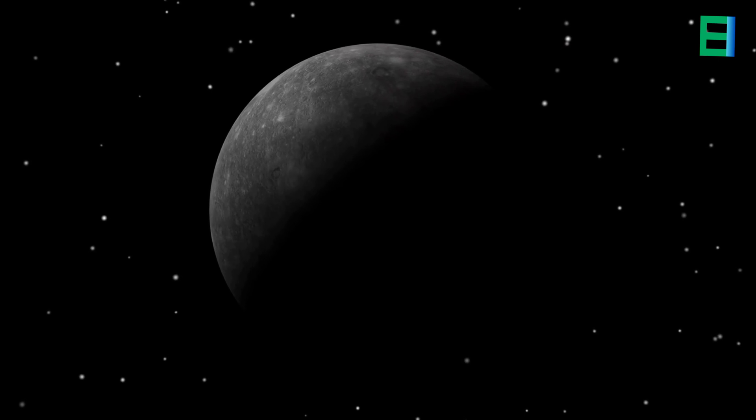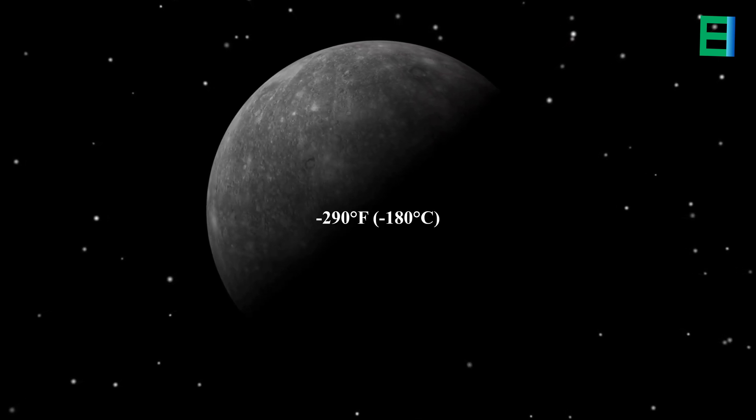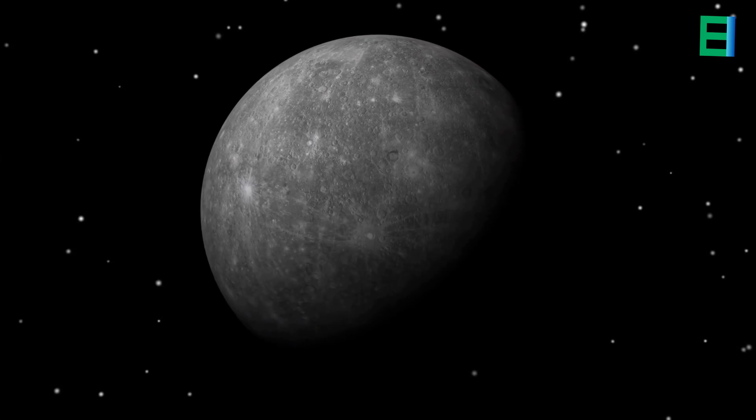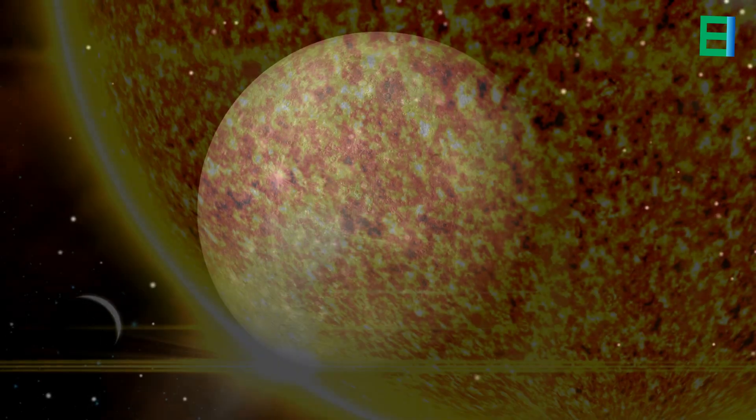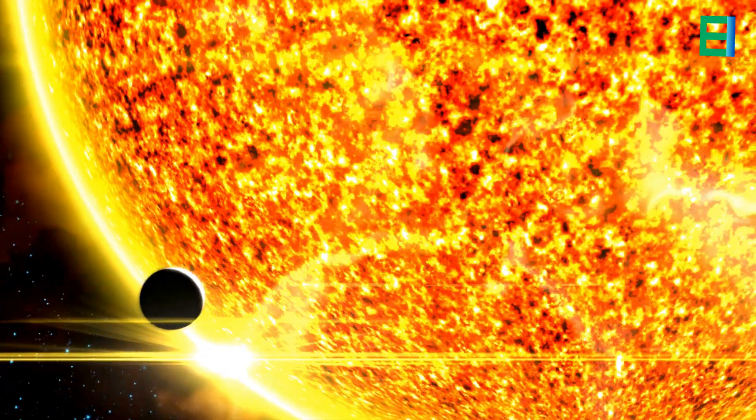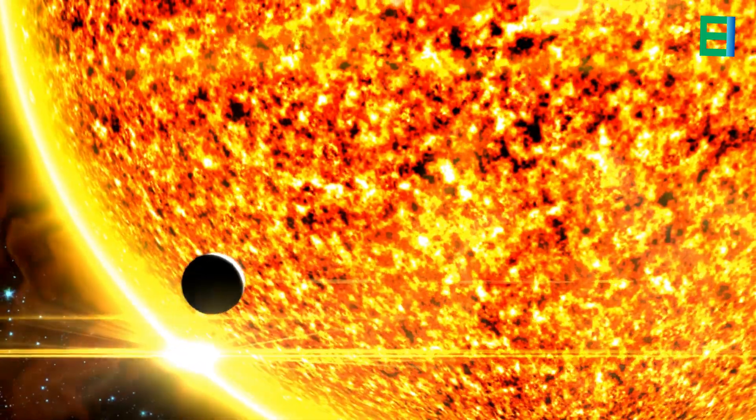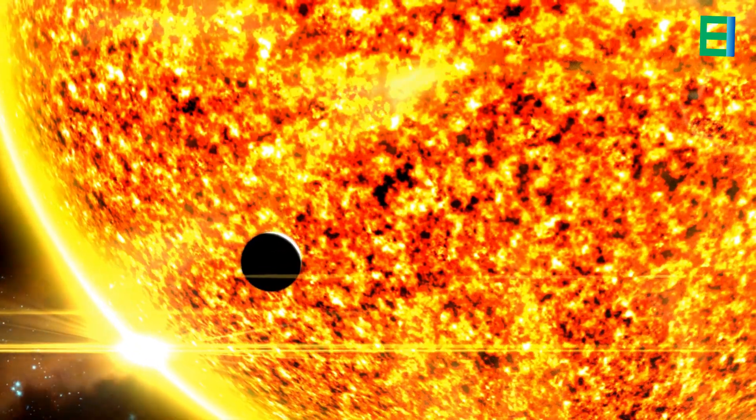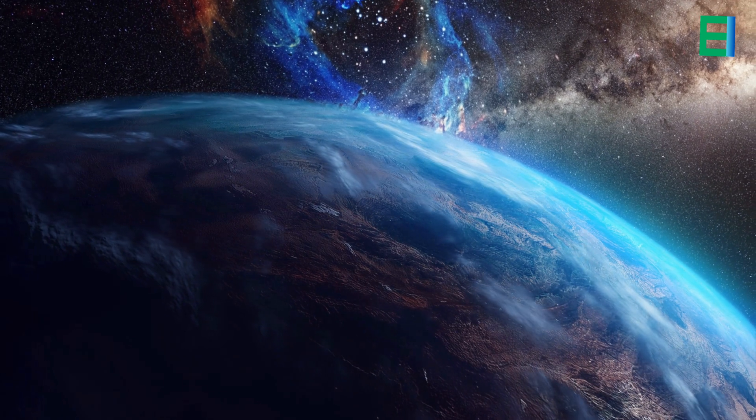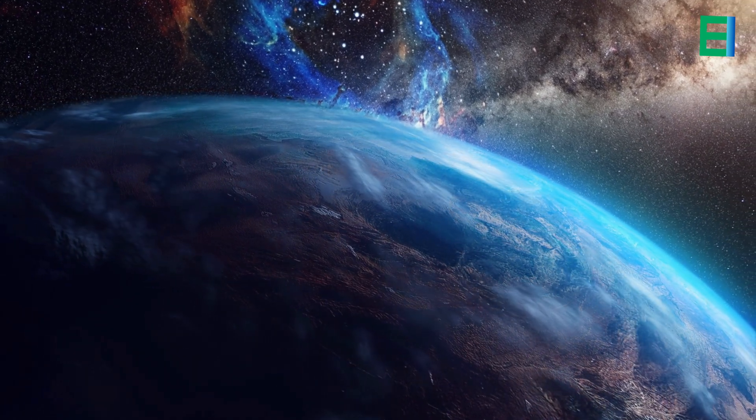Have you ever wondered why Mercury can withstand the sun's scorching heat without being burnt? Despite its proximity to the sun, Mercury does not burn up or get consumed by the intense heat because it has a combination of factors that protect it. Mercury has a very thin exosphere which is not significant enough to create the atmospheric drag that could cause it to burn up.